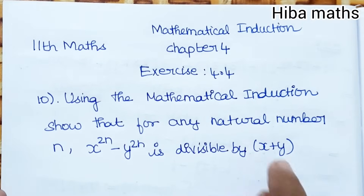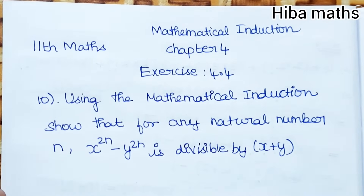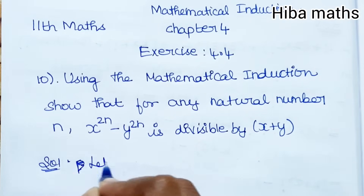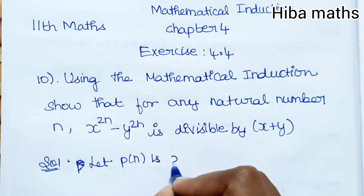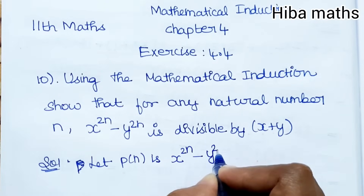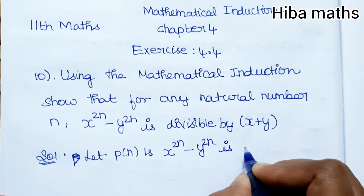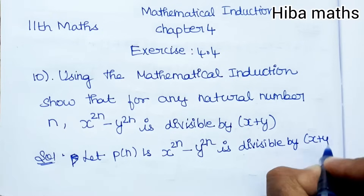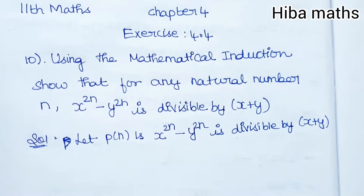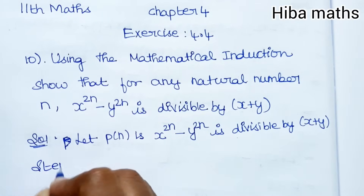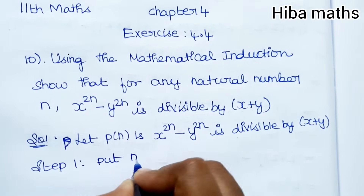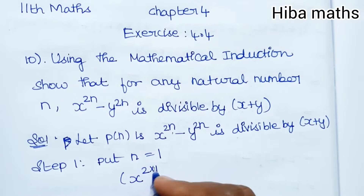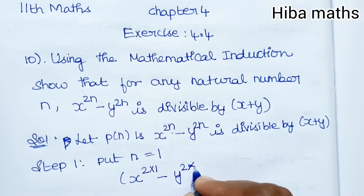So we need to show that x+y divides the term x^(2n) - y^(2n). In the proof and solution, let P(n) be the statement that x^(2n) - y^(2n) is divisible by x plus y. Step 1: substitute n equal to 1, so x^(2×1) minus y^(2×1).